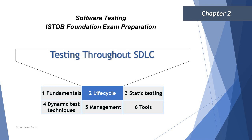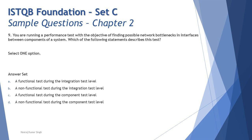Question number 9: You are running a performance test with the objective of finding possible network bottlenecks in interfaces between components of a system. Which of the following statements describes this test? We recall that non-functional testing levels were introduced in Chapter 2 as a comparison between functional and non-functional testing — covering security, performance, usability, etc.